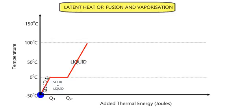So, as we can see here, there was an amount of energy supplied from Q1 to Q2, so Q2 minus Q1, and that energy was used to change the phase from a solid into a liquid. We could measure that amount of energy, and this amount of energy is what we know as the latent heat of fusion.